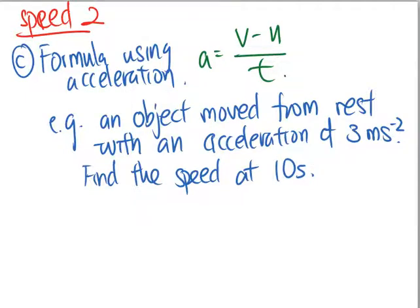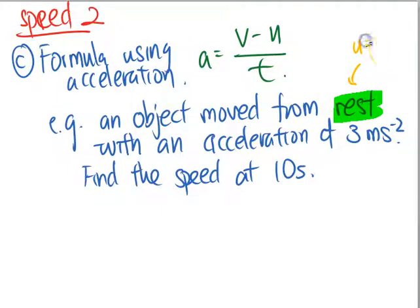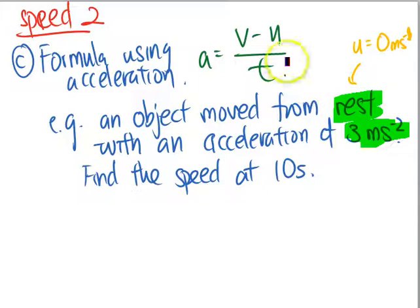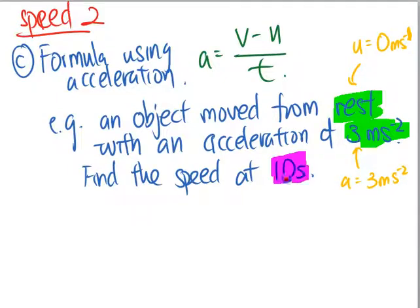There are some important keywords you must see here. They say rest, so if they say it is rest, which means that from rest, means that U equals to 0 meters per second at the start. Then I know that my acceleration is 3 meters per second square. And the last one, they ask you to find the speed. So the time taken is 10 seconds. So this is your T.